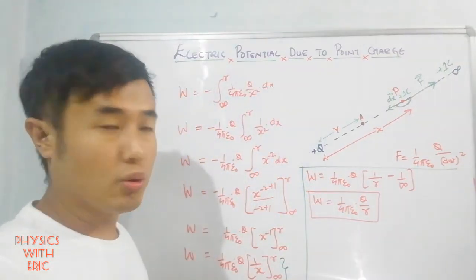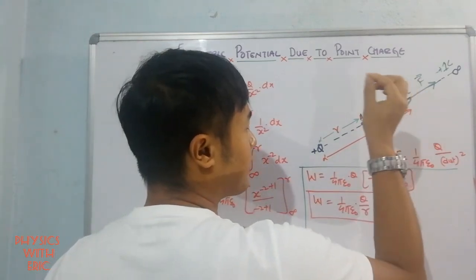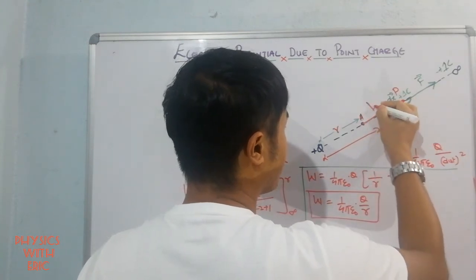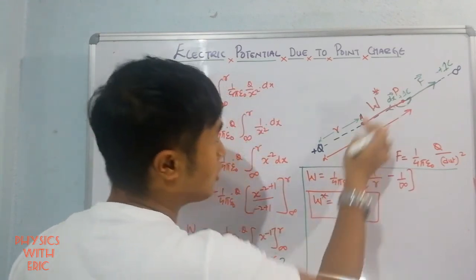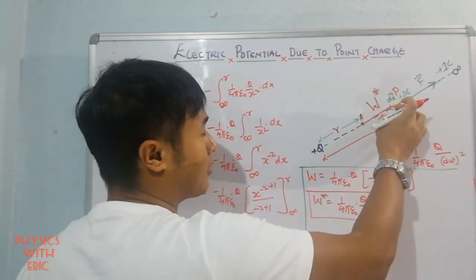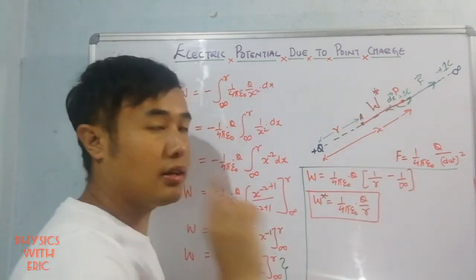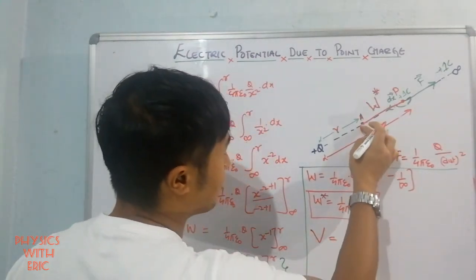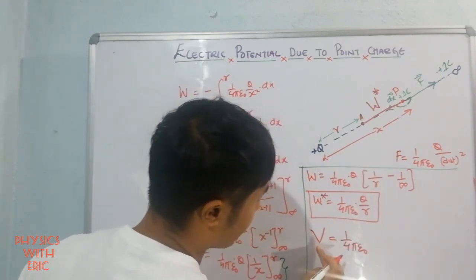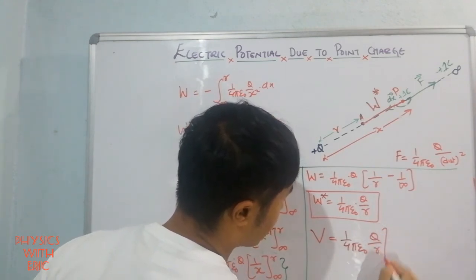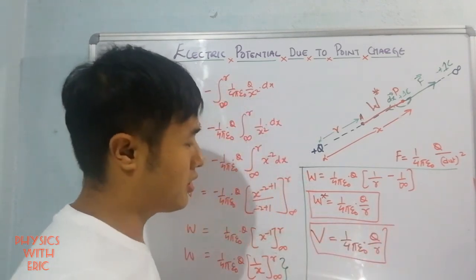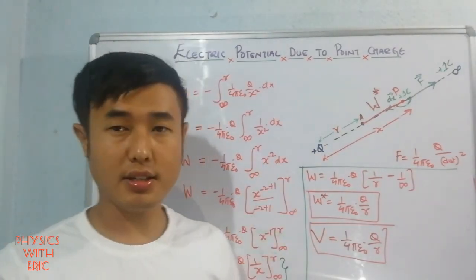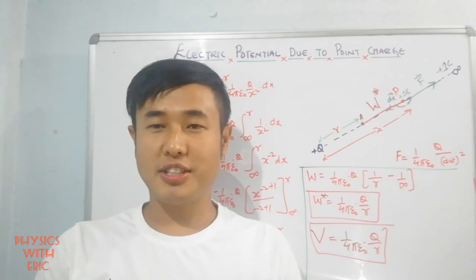This total work done to bring the unit positive test charge from infinity to point P is the electric potential at that point. So we can simply write V = (1/4πε₀) × (q / r). This is all about electric potential due to a point charge. Hope you all got it — thank you for watching, and see you in the next video.